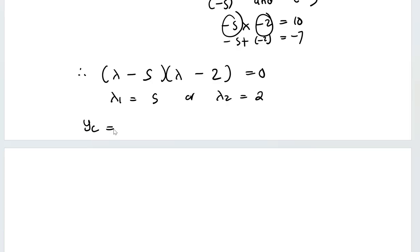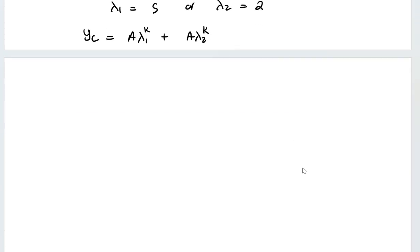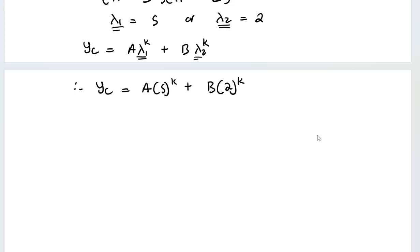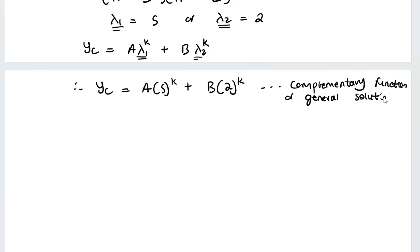The complementary function is y sub c equals A·λ₁^k plus B·λ₂^k. Substituting λ₁=5 and λ₂=2, the complementary function is y sub c equals A·5^k plus B·2^k. This is the general solution — it works for any constants, which is why we call it the general solution.